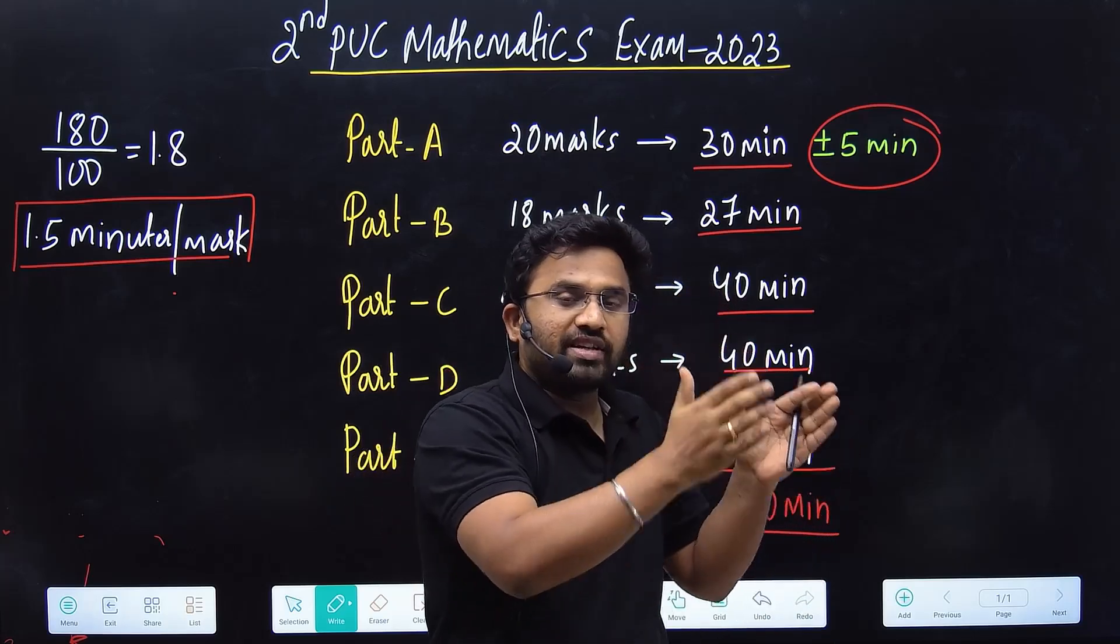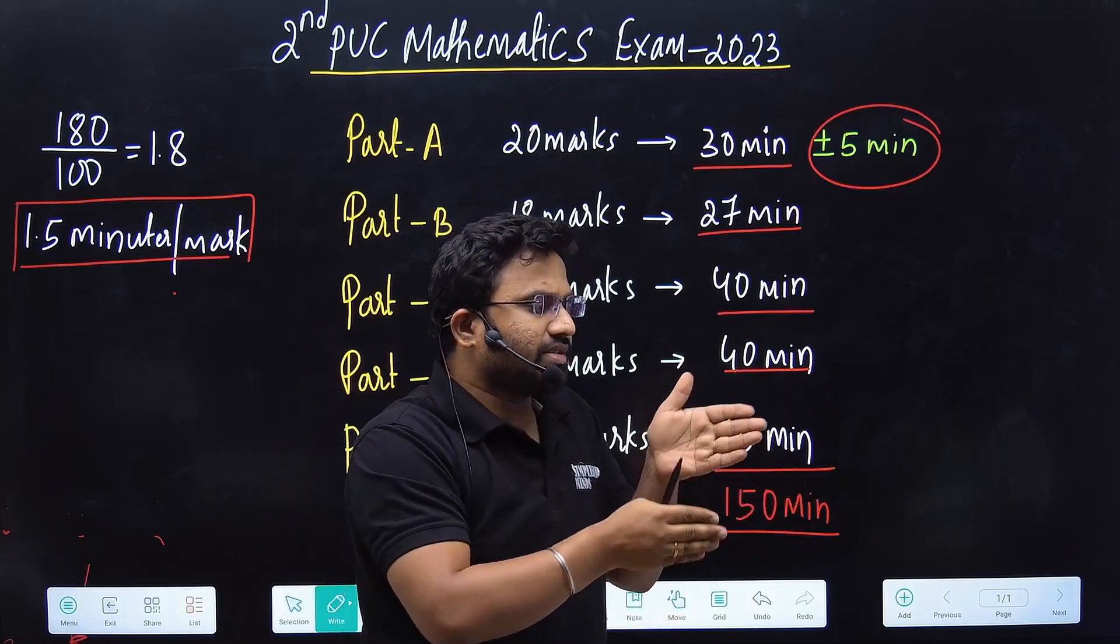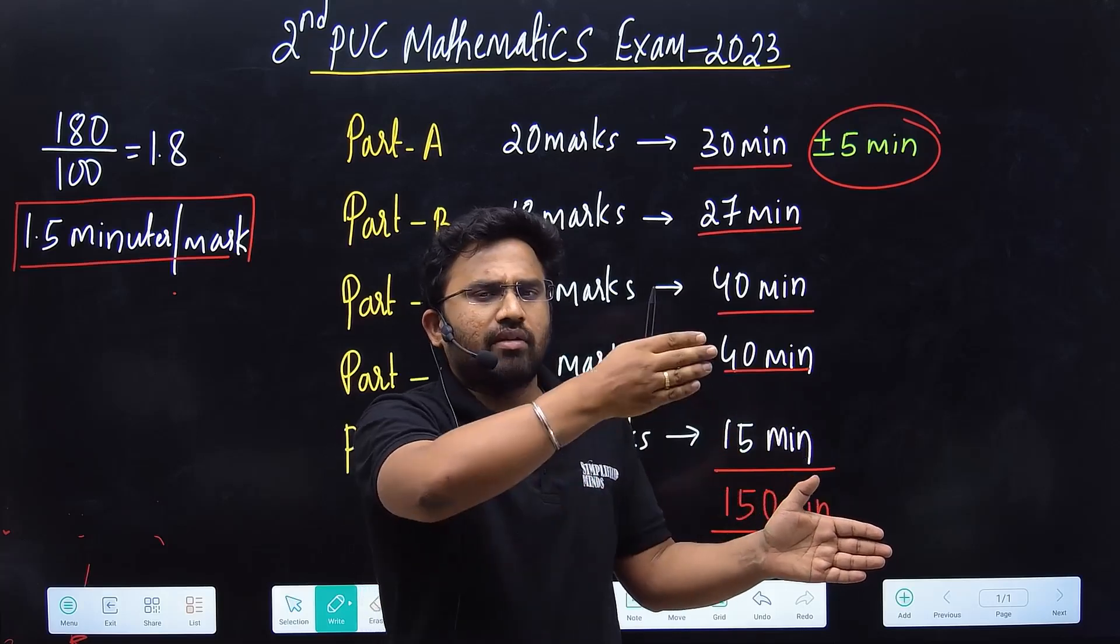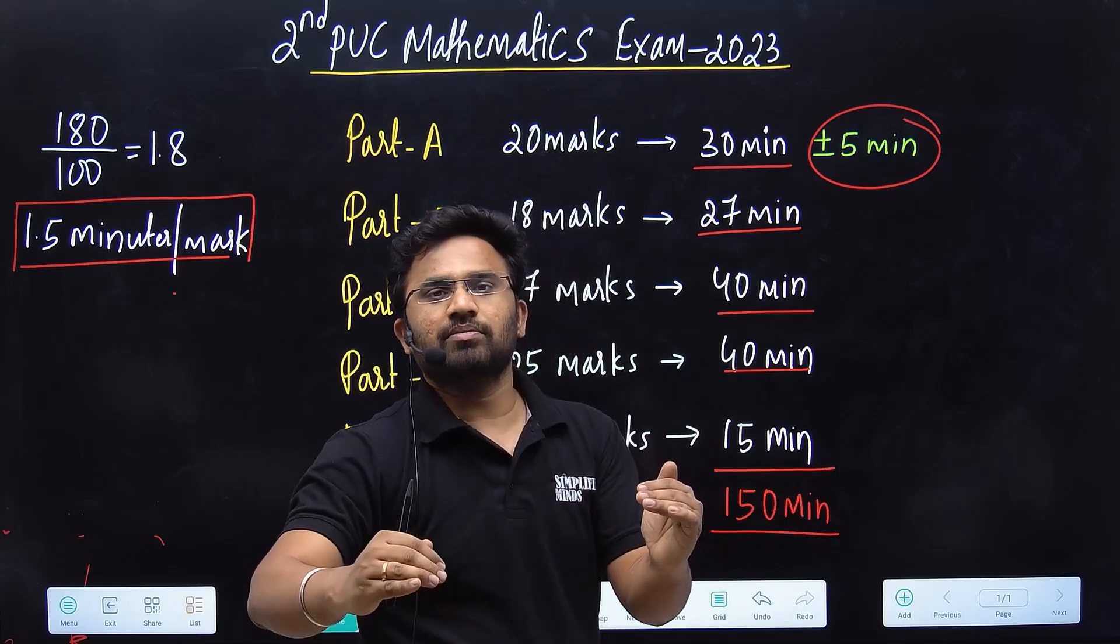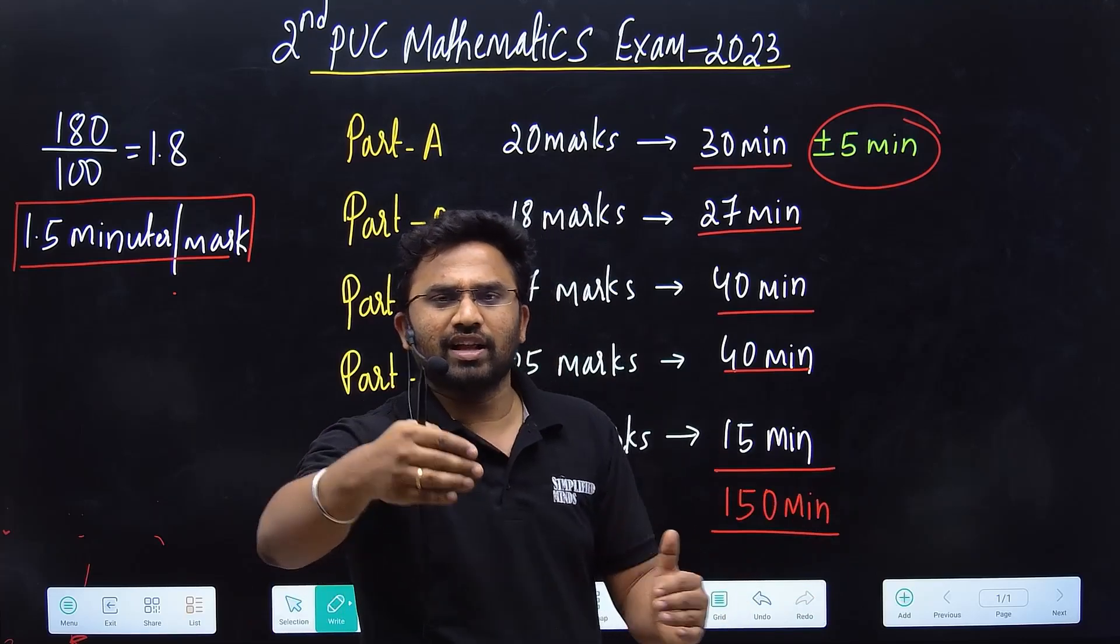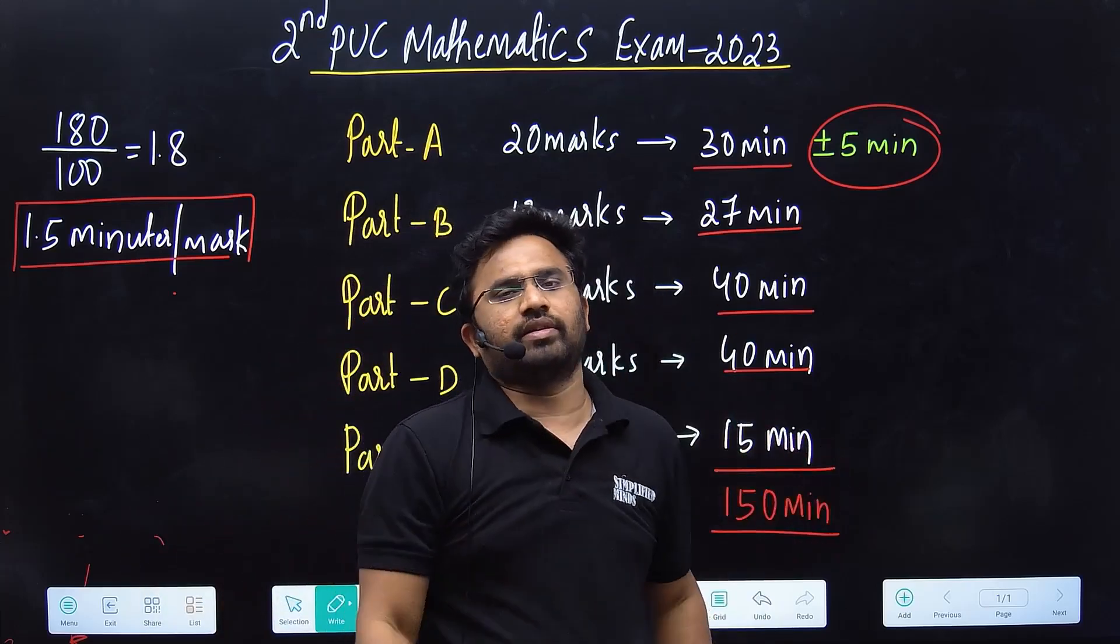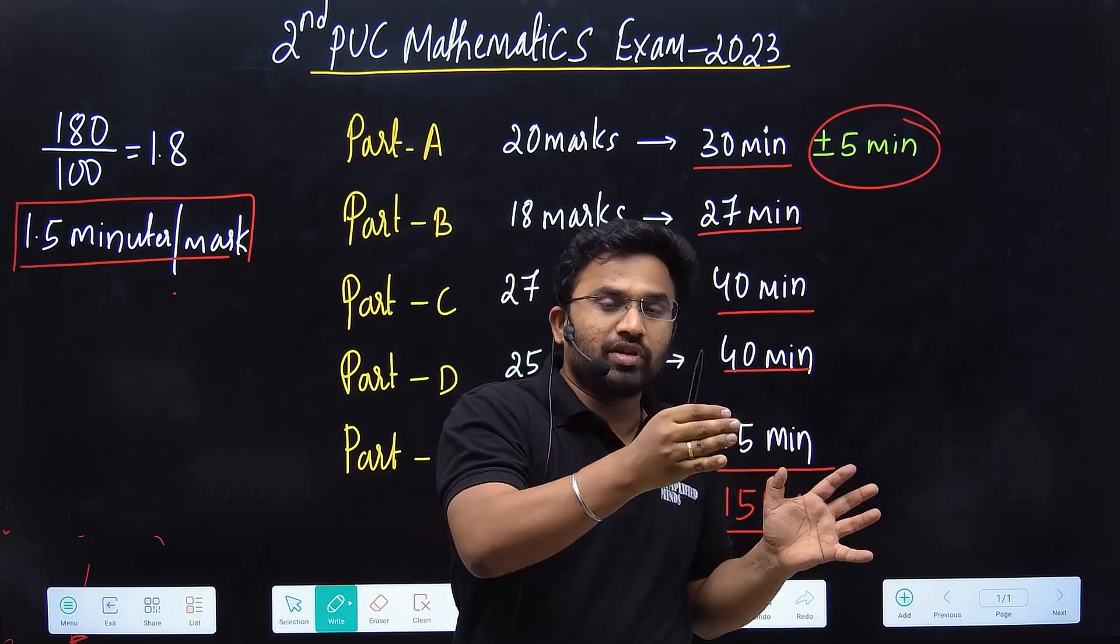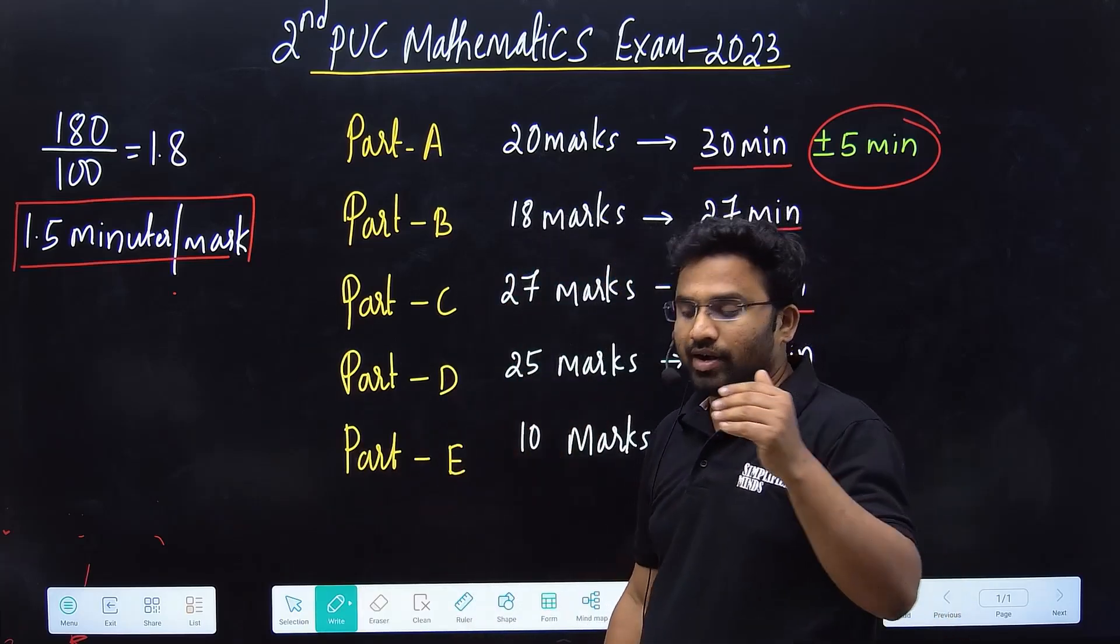For example, if you start at 10:30, maybe Part D by 11:15 maximum, extend 5 minutes if needed, then Part C by 12:20. Fix the timings properly. This time limit and time zone management is very, very important. Try to maintain it throughout - this is very, very important.